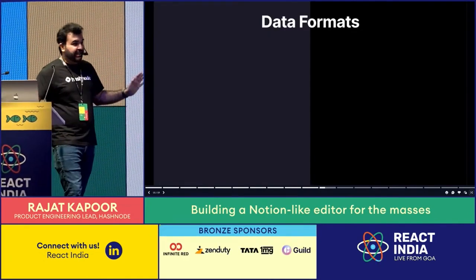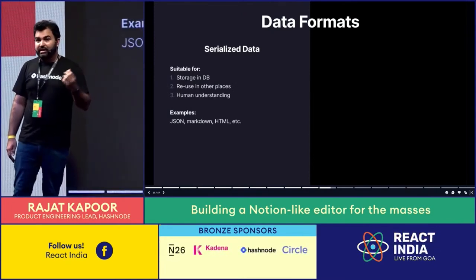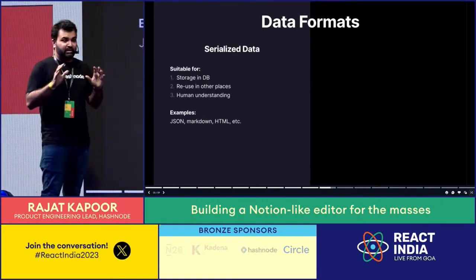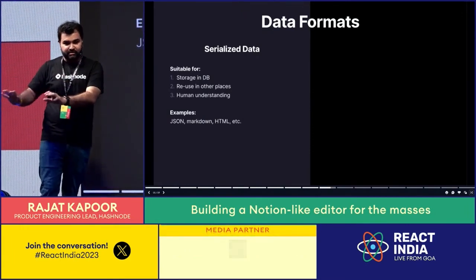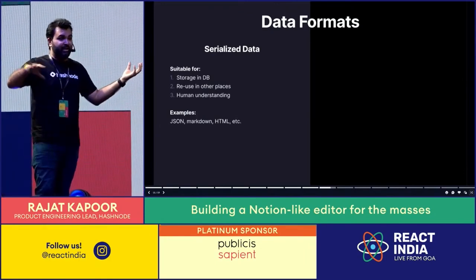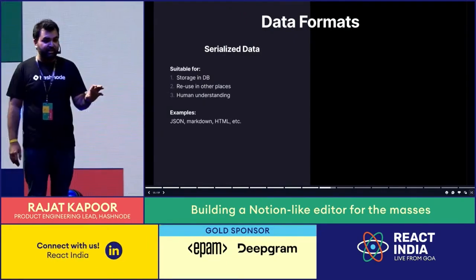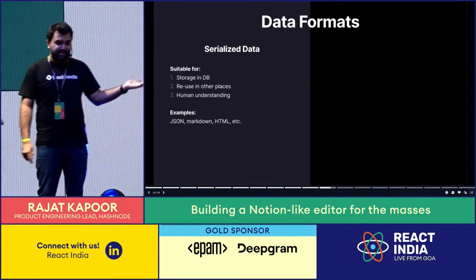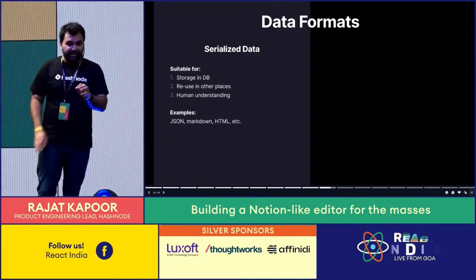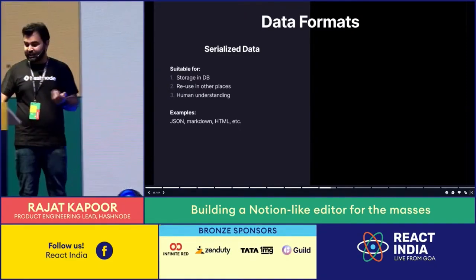The first concept is data formats. There are two things to worry about. First is serialized data — the format in which you store the article in your database. It's optimized for storage, for reusing data at other places, and for human understanding. Examples are JSON, Markdown, or HTML. You can look at HTML, reuse it elsewhere, render it right away, and run queries on it — like checking whether an HTML document has an image.